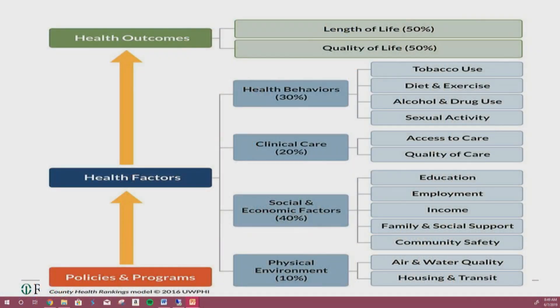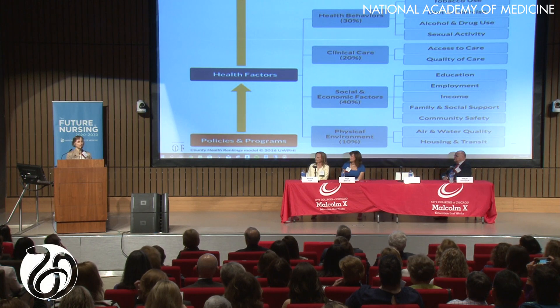The county health rankings is my favorite model for looking at this. We talk about all the things that impact health outcomes, and you can see that 80% of those things are not clinical care. While we've always worked very hard in nursing at being excellent clinicians, clearly when you think about those mediocre outcomes, we're missing something — we're missing all of this other 80%.